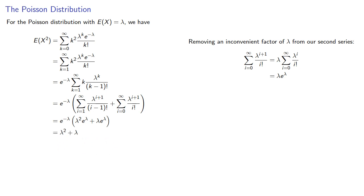And consequently, the variance of the Poisson distribution will be lambda.